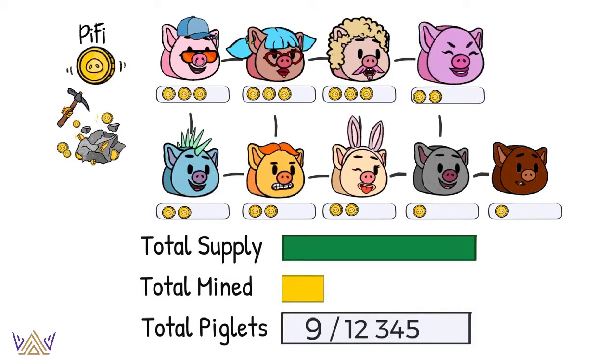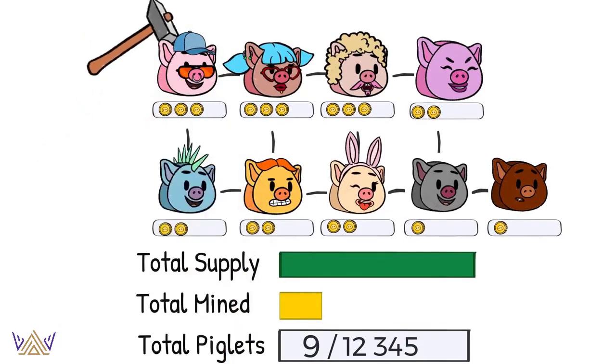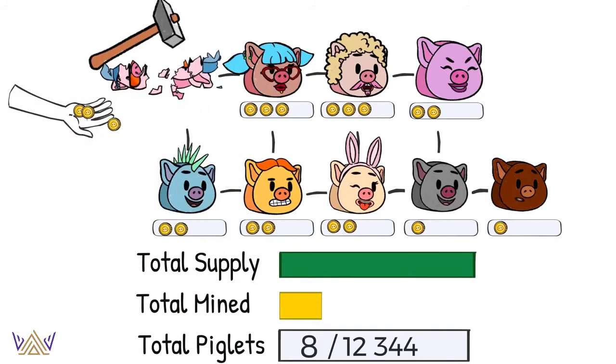The whole twist to the tokenomics is that in order to use a piglet's tokens, you have to break it just like a real piggy bank. This destroys the NFT, ensuring the deflationary nature of the project.